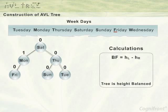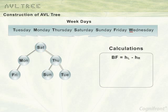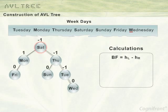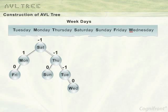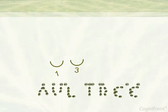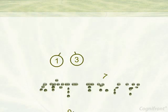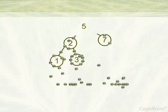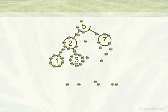As Sunday is greater than Saturday, it is placed on the right side of Saturday. The last element is Wednesday, which is inserted to the right subtree of Saturday. The tree is now height balanced. So friends, here we learned how to construct AVL trees.